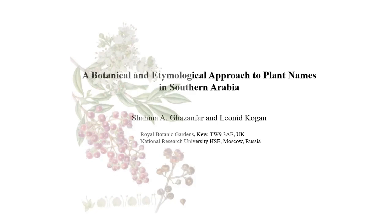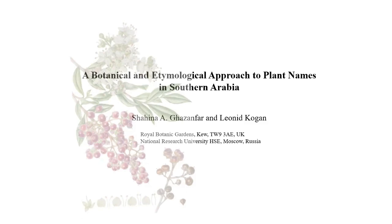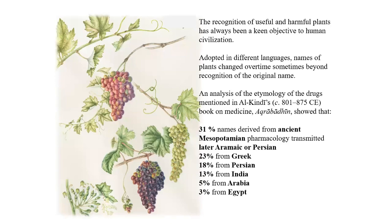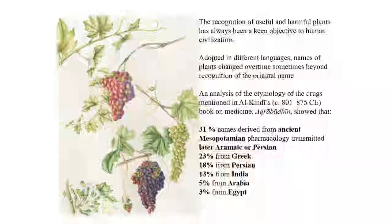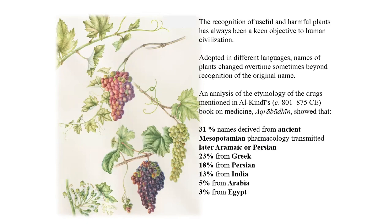What I'm going to talk about is basically the chapter I've written in the book. It is all about plants and tracing the actual names of plants. As we all know, the recognition of useful and harmful plants has been going on for a very, very long period of time. Plants have moved around from one place to another thousands of years back. When trade started, plants moved from China, from Mesopotamia, from Malaysia.